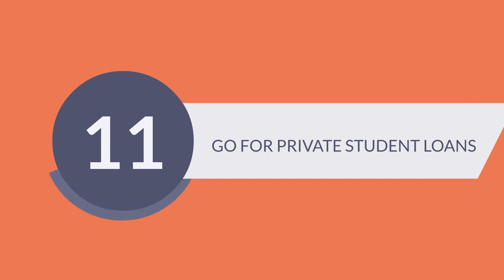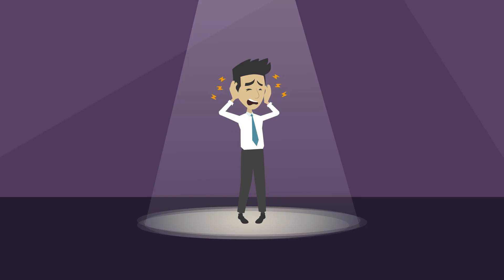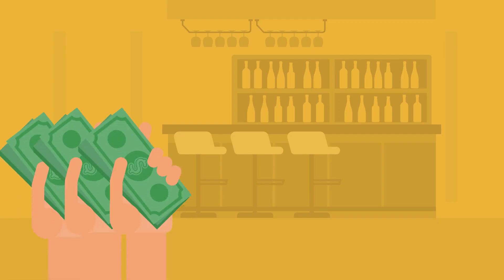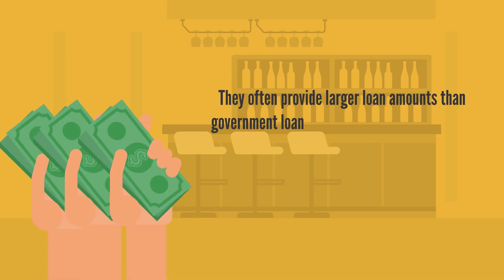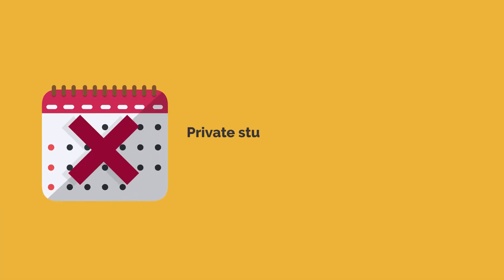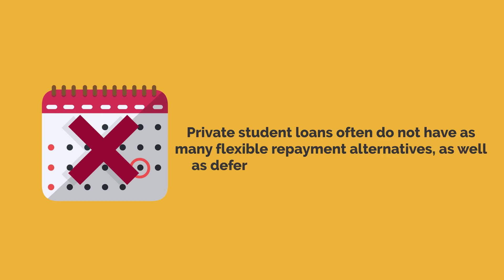11. Go for Private Student Loans. If you have exhausted your federal student loan choices, you may wish to consider private lenders. They often provide larger loan amounts than government loans, but you must have strong to exceptional credit or a credit-worthy cosigner to qualify at a competitive rate. Private student loans often do not have as many flexible repayment alternatives as well as deferment and forbearance programs.